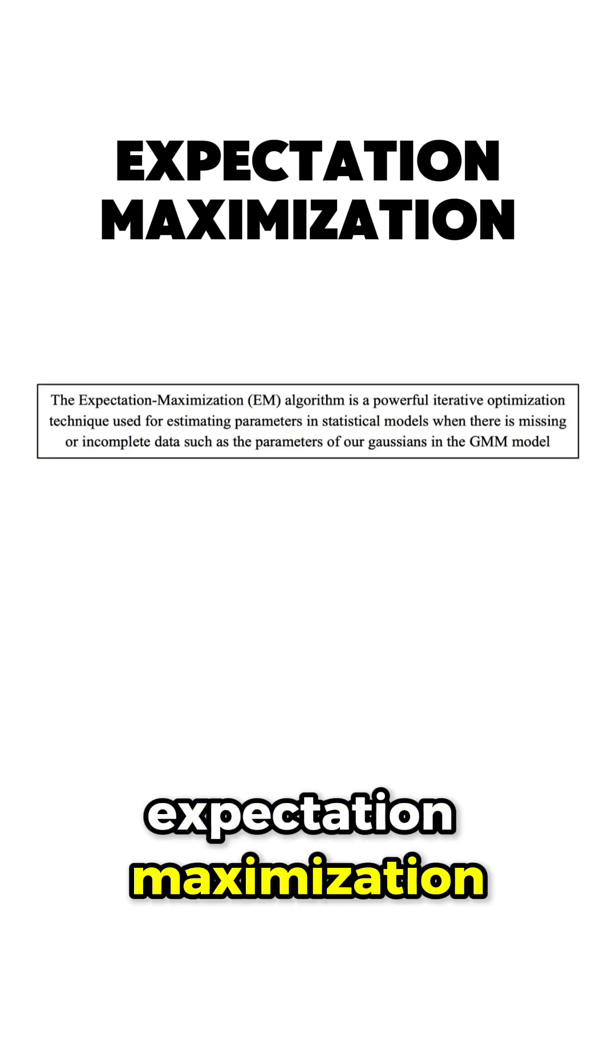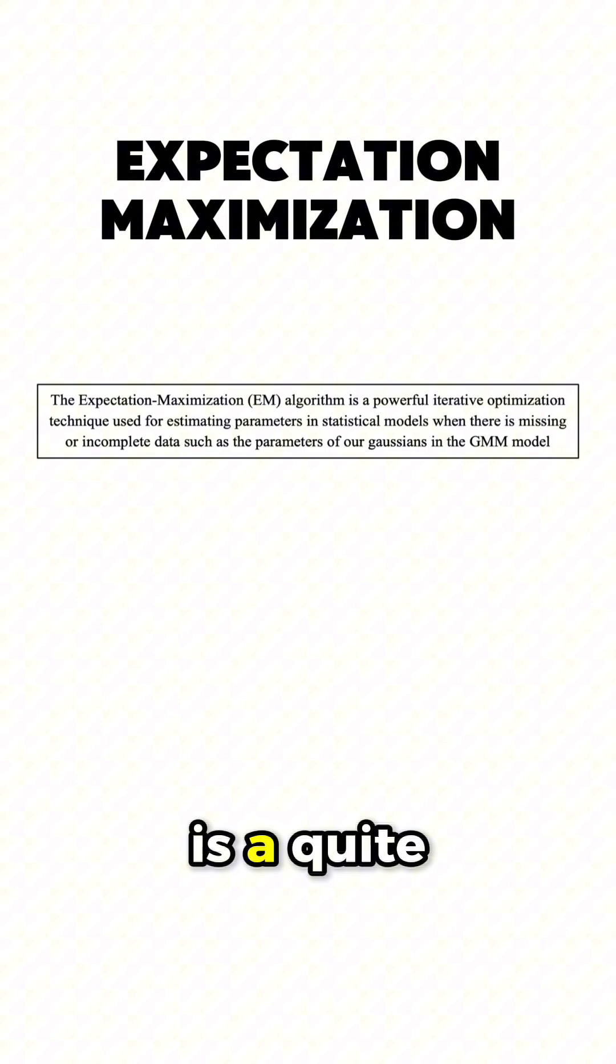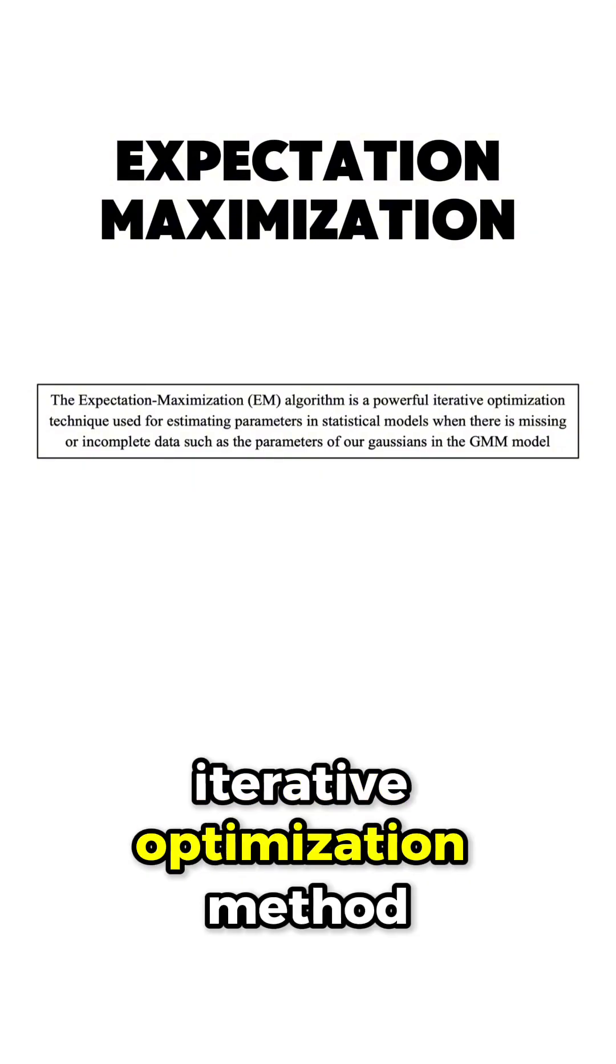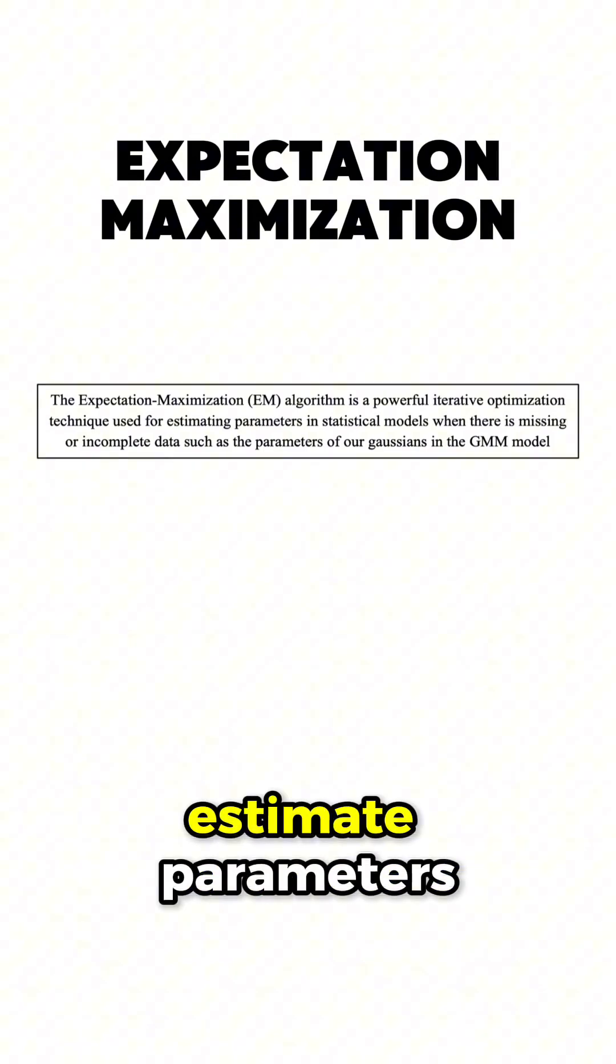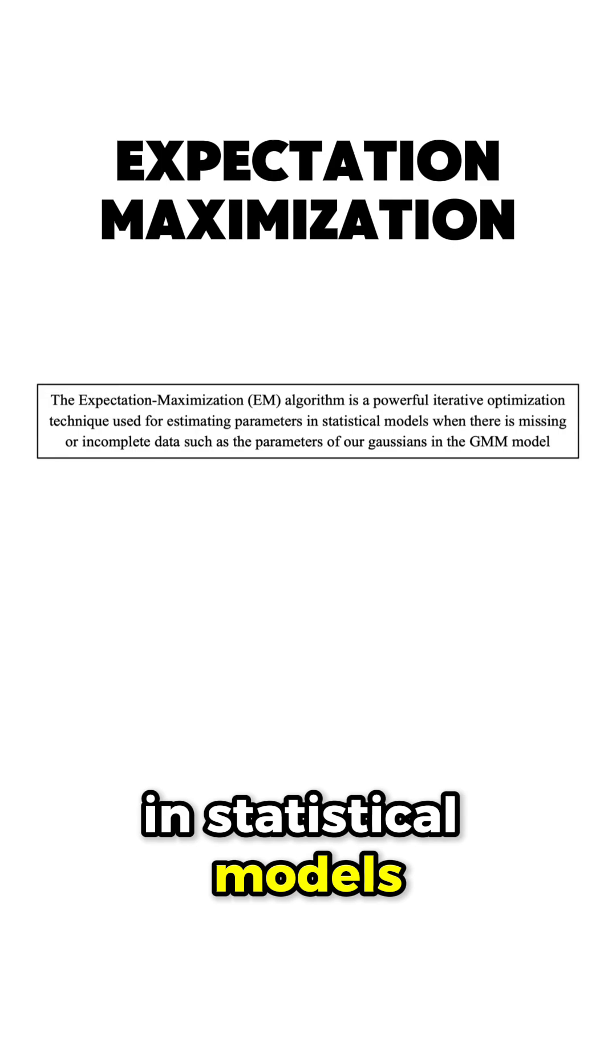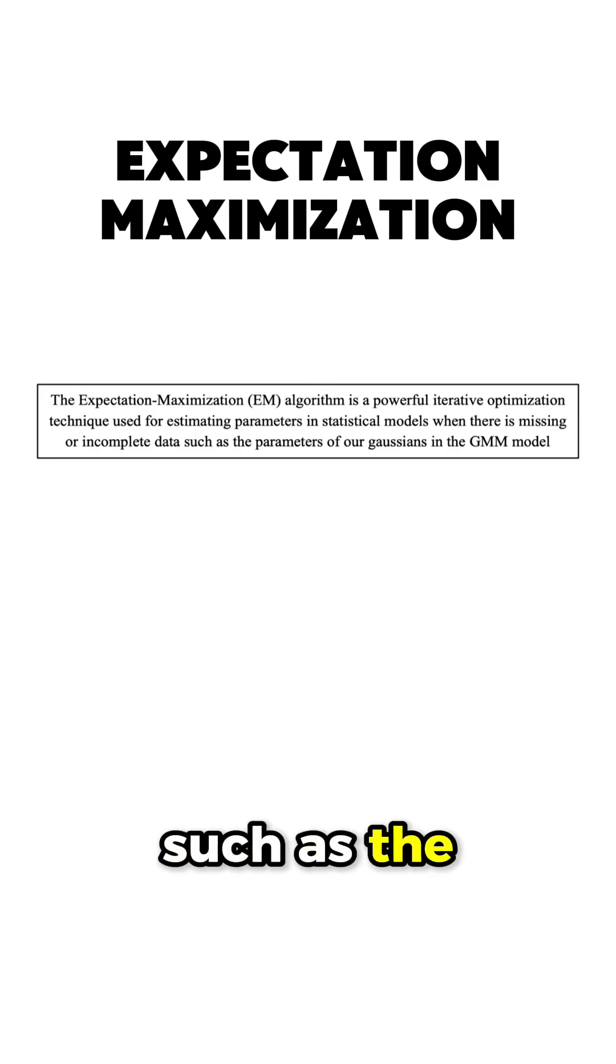The expectation-maximization algorithm is a powerful iterative optimization method that estimates parameters in statistical models when there is missing or incomplete data, such as the parameters of our Gaussians in the GMM model, and it consists of iteratively applying two steps.